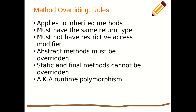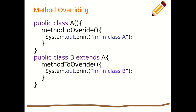We have rules to follow when implementing method overriding. Rule number one: it applies to inherited methods only. It must have the same return type. It must not have more restrictive access modifiers — meaning whether it's private or public. Abstract methods must be overridden. Static and final methods cannot be overridden. This is basically what we refer to as runtime polymorphism.